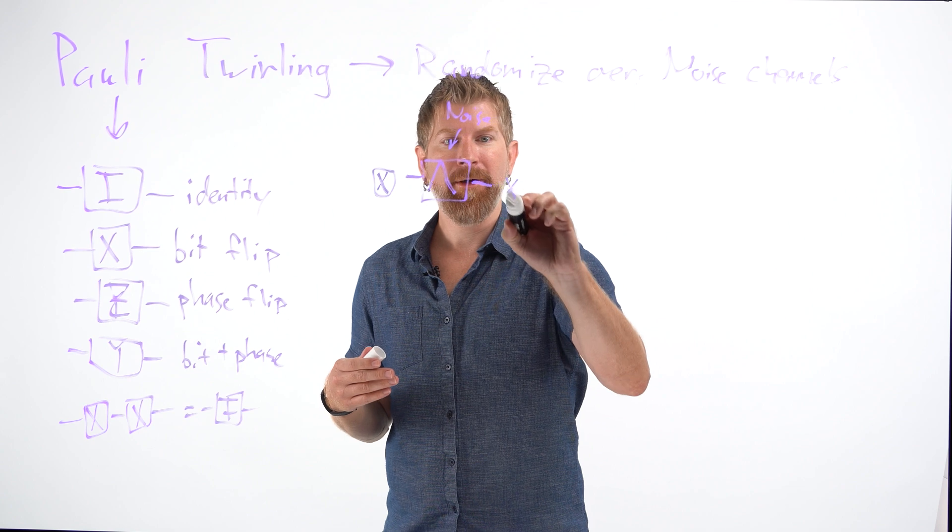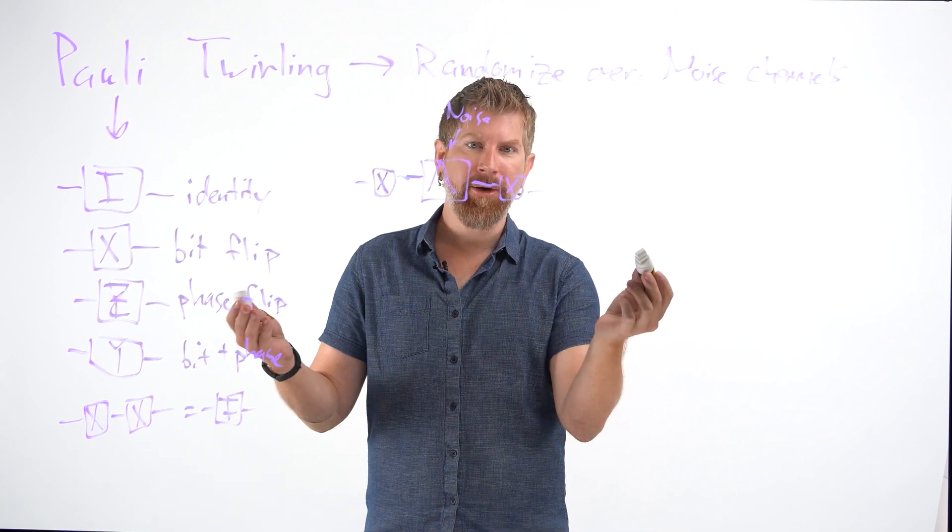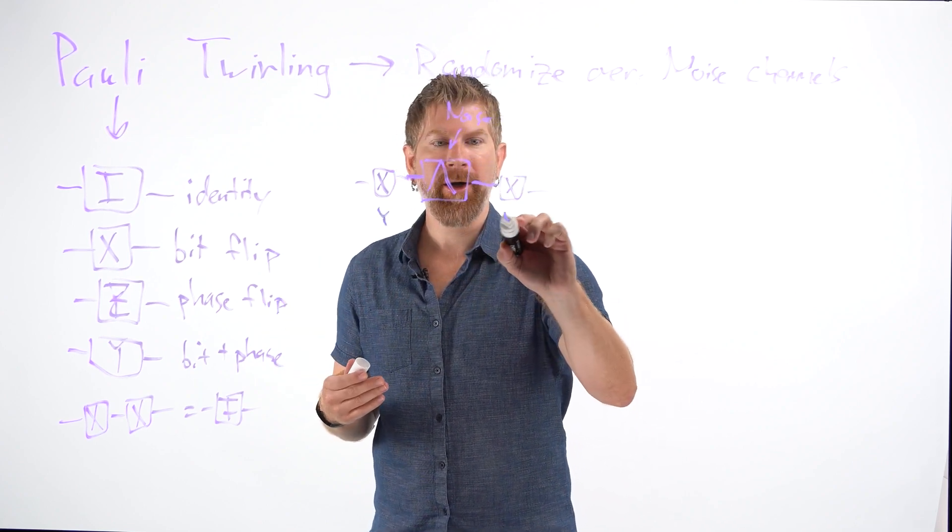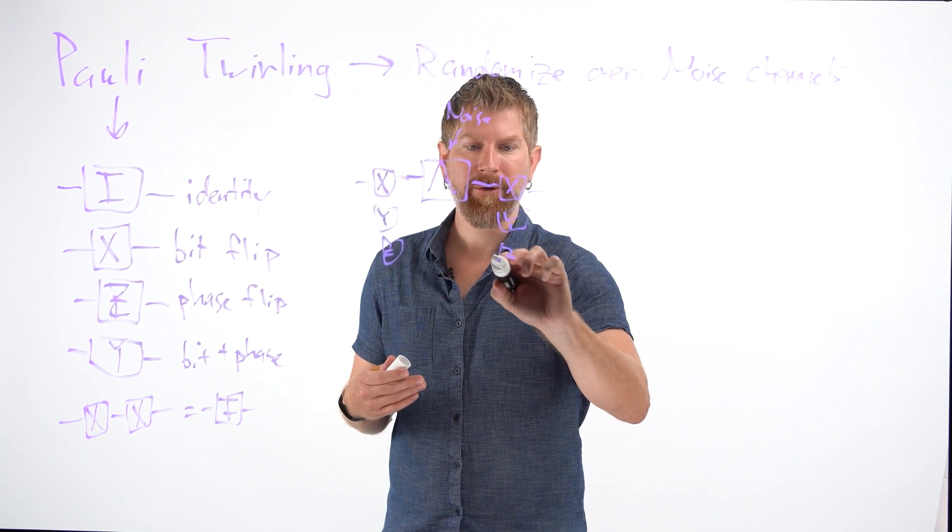So for example, if I was to do an X here and an X here, then ideally there should be no operation on the qubit if the noise was zero. Same, we could do a Y and a Y, Z, Z, for example.